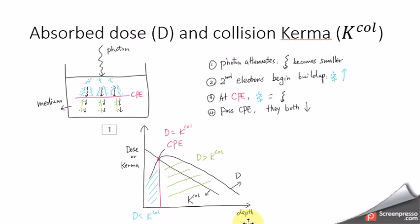So what happens with the collisional kerma is it always decreases because the photon beam always gets attenuated as it goes deeper.